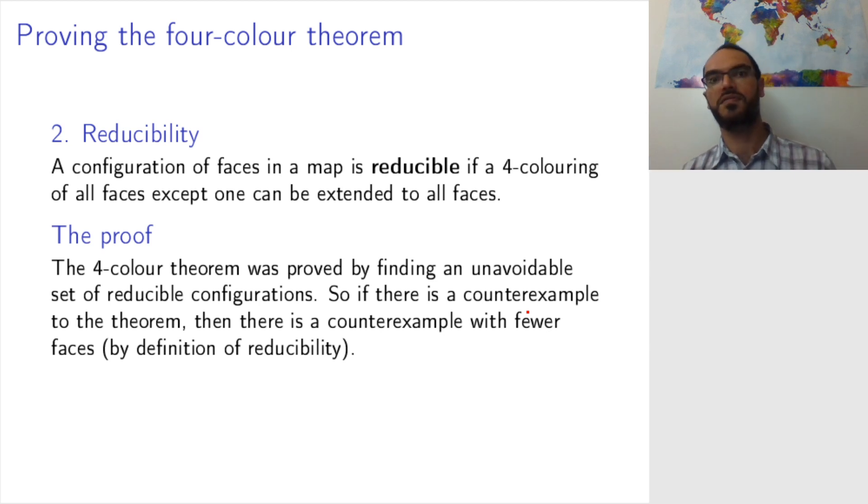Okay, so now if I started with a million faces on my map, now I know and if that is a counterexample, then I will have a counterexample with a million minus one faces. But then that is a map and that still has this unavoidable set of reducible configurations because every map has this unavoidable set of reducible configurations because unavoidable. So then I can play the same game and reduce the number of faces by one.